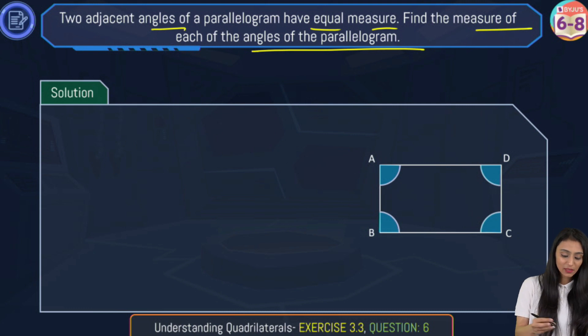Two adjacent angles have equal measure, that means either angle A and B are equal in measure, B and C, C and D, or D and A, right?